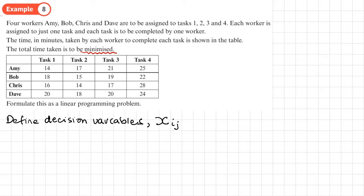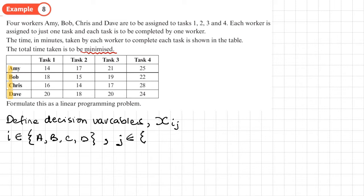We define I as the workers — Amy, Bob, Chris, Dave — so I takes values A, B, C, D. We do the same for J representing the tasks, so J takes values 1, 2, 3, and 4.